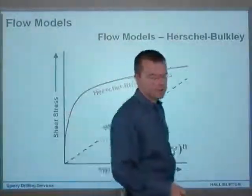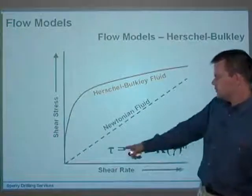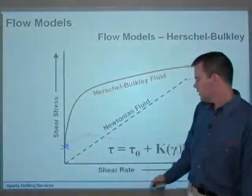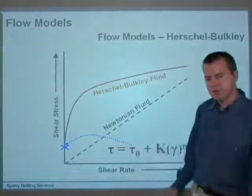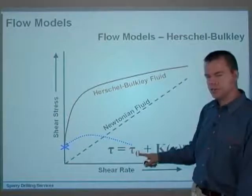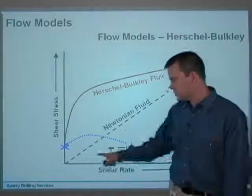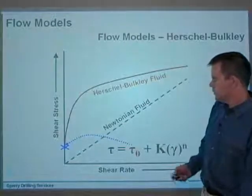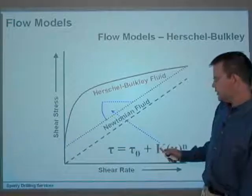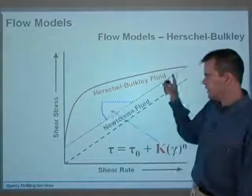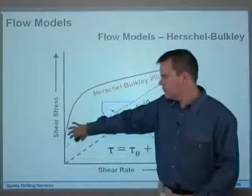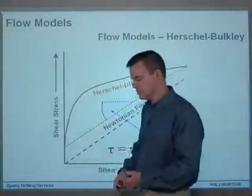Looking at that graphically, here we've got the same equation just explained, and this is the sort of curve you end up with. It starts off intersecting the y-axis at something higher than the origin due to the tau-zero value. If tau-zero were zero, it would start at the origin and describe a pure power law fluid. K in this model is actually describing the slope of the line, and it changes because you're using a variety of different n and K values throughout the model.